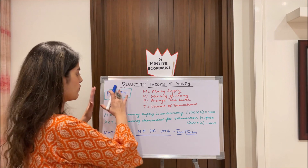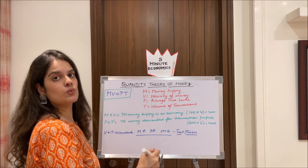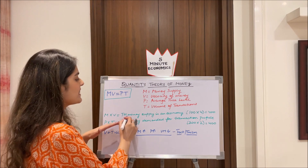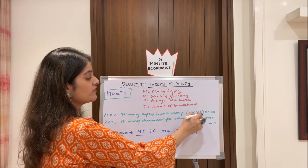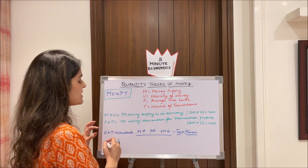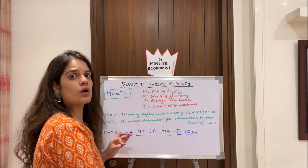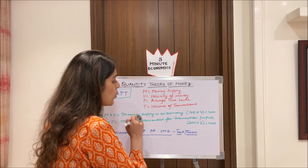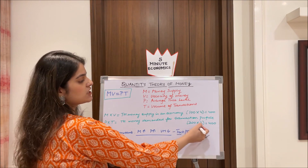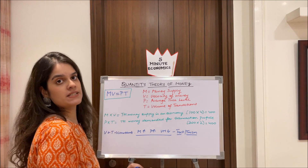On the left-hand side — the supply side — M multiplied by V gives the total money supply in the economy. For example, with M = 100 and V = 4, MV = 400. On the right-hand side, PT represents the total money demanded for transaction purposes: P is the price level and T is the volume of transactions. For example, a phone cover priced at 200 rupees bought twice gives PT = 400. So MV equals PT — both sides are 400.